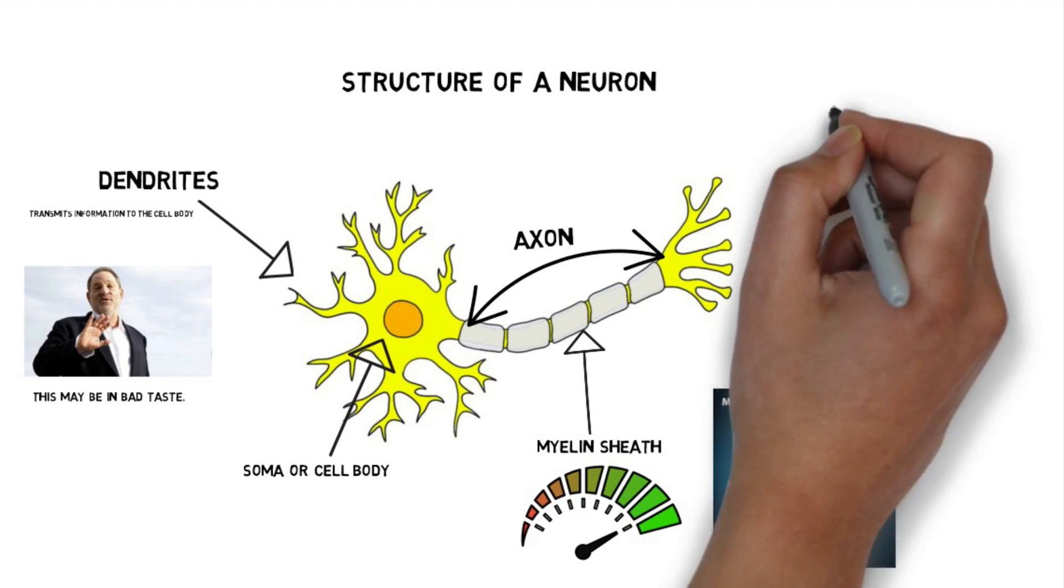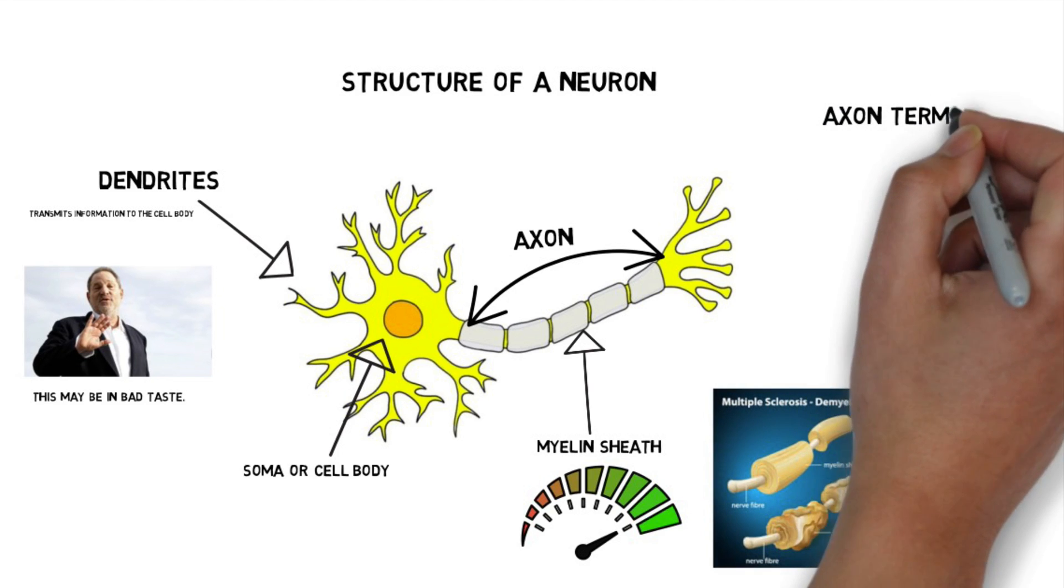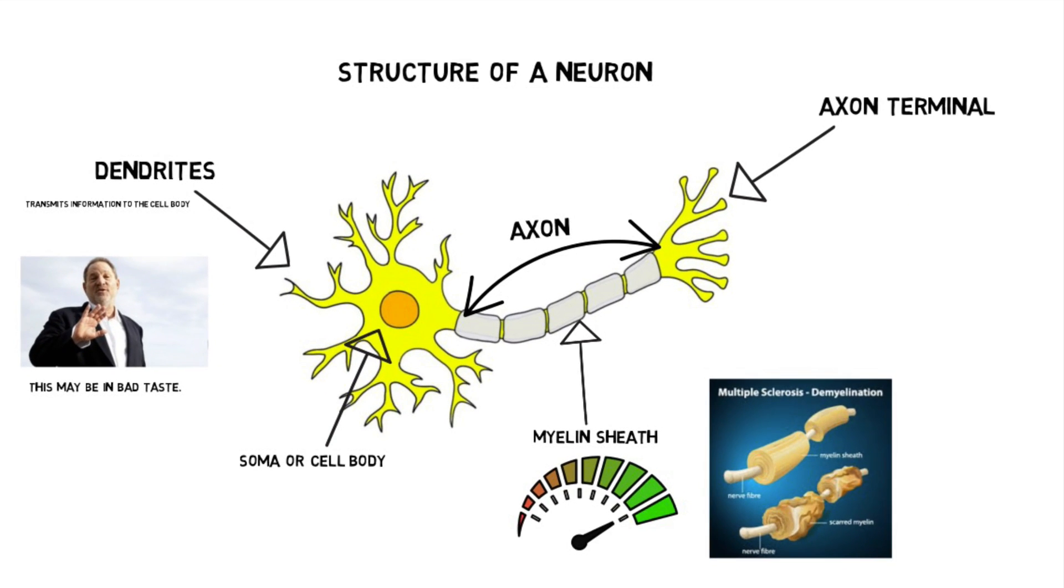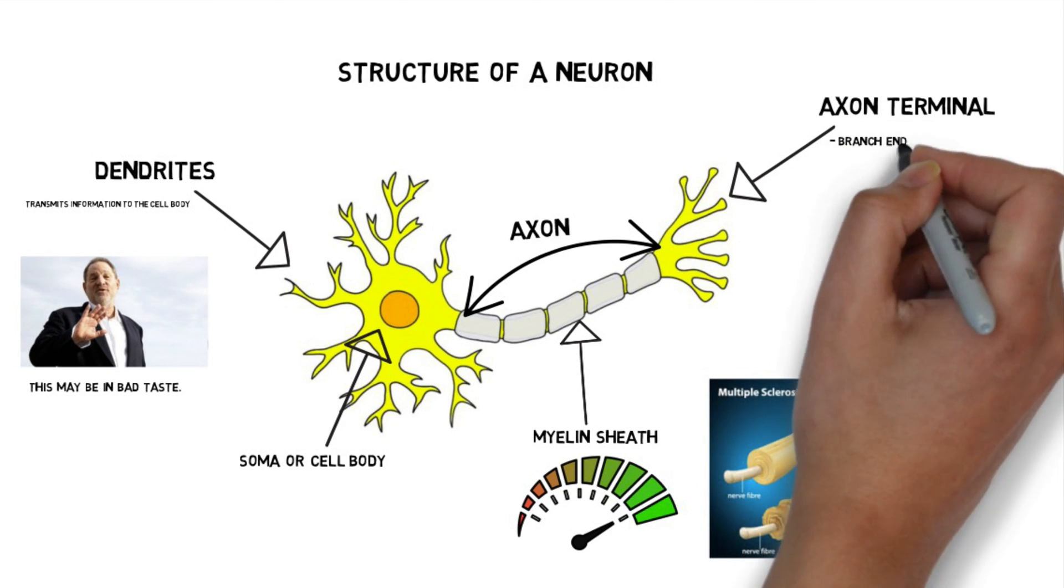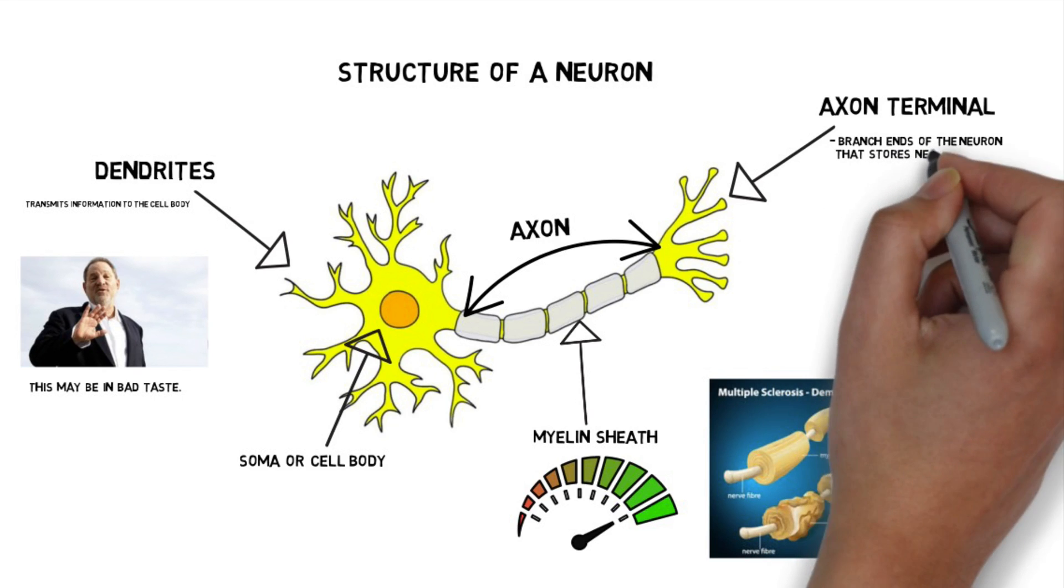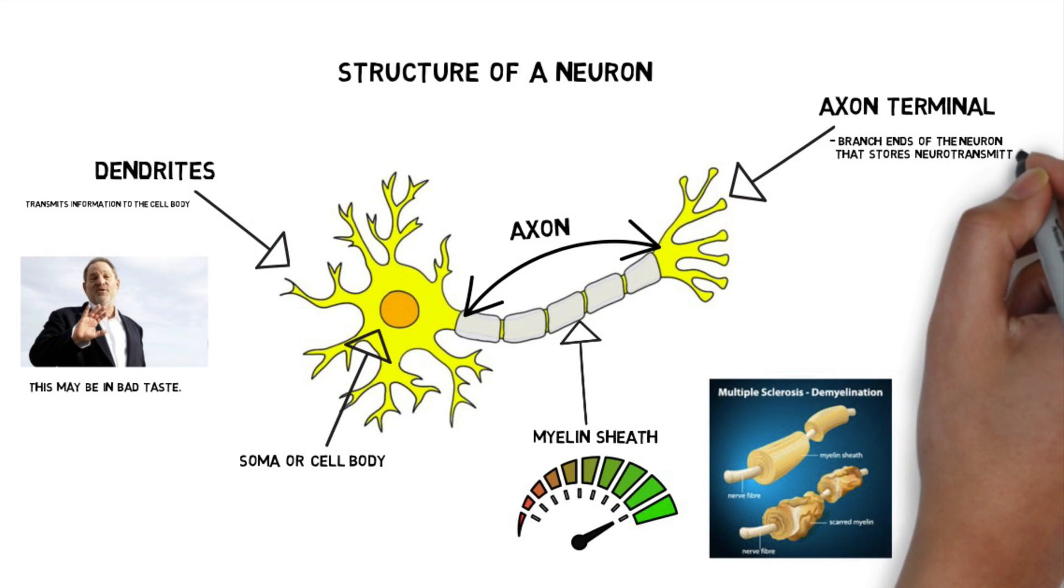At the bottom of the axon, you have the terminal buttons. I've also heard it called axon terminal or end buttons. And the function of these terminal buttons is to store neurotransmitters that could be fired across the synapse to the dendrites on the next neuron.